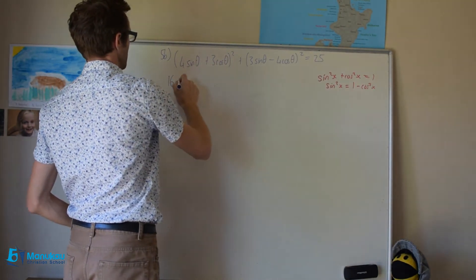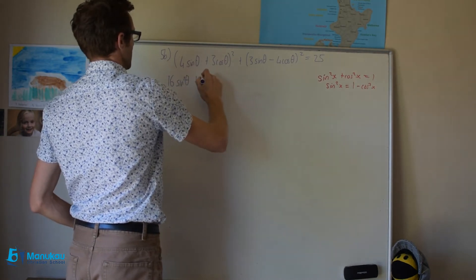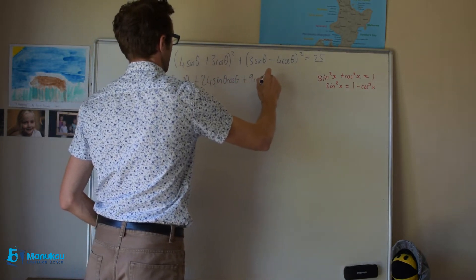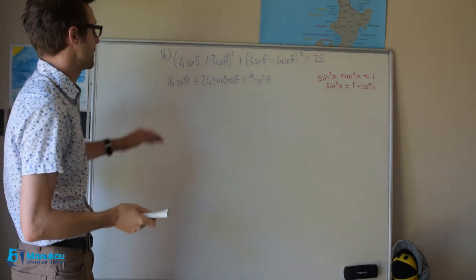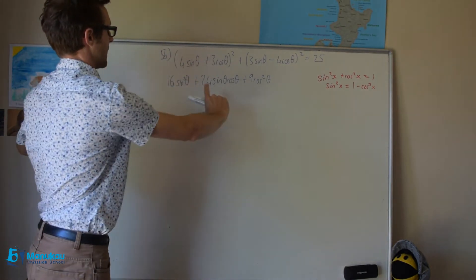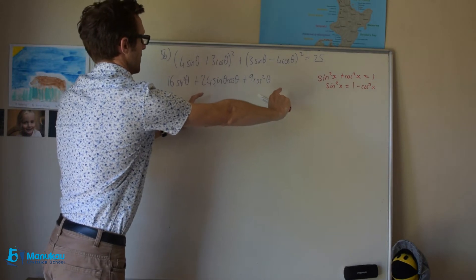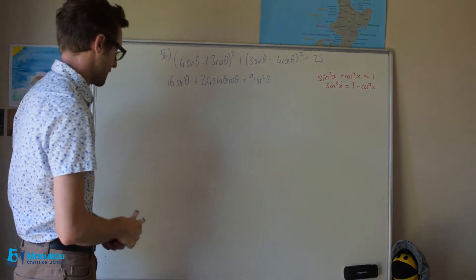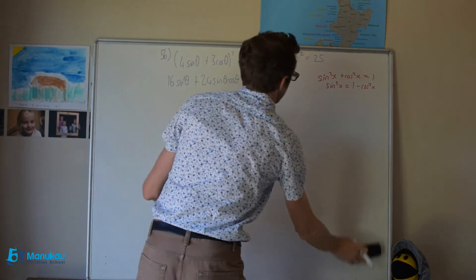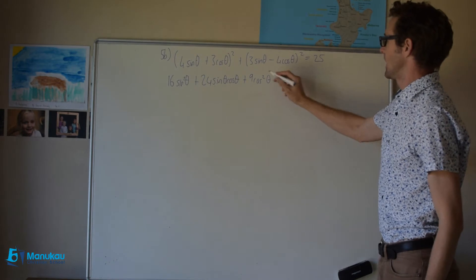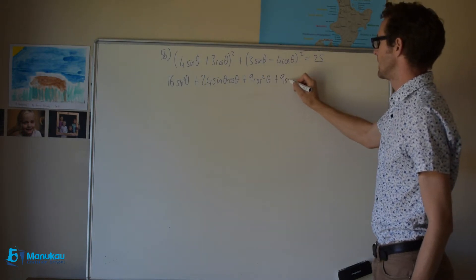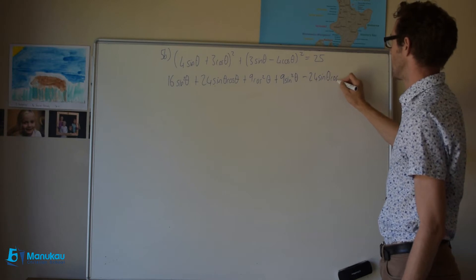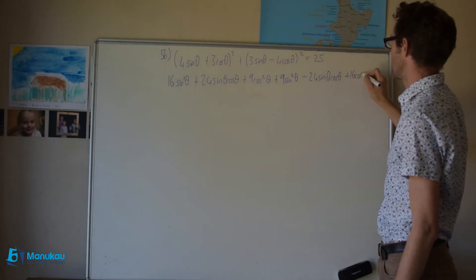Expanding the first bracket, we get 16 sine squared theta plus 24 sine theta cosine theta plus 9 cosine squared theta. If you're struggling with this, my suggestion is to draw out your double brackets — four sine theta plus three cosine theta, times four sine theta plus three cosine theta — and then do FOIL. For the second bracket, we get 9 sine squared theta minus 24 sine theta cosine theta plus 16 cosine squared theta.